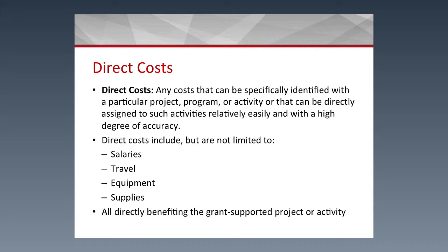Direct costs are the crux of the application — where the majority of your costs will be reflected and requested. These are costs that can be specifically identified with a particular project, program, or activity; can be directly assigned; and are easily identified with a high degree of accuracy. Examples of direct costs include travel, salaries, equipment, and supplies. They all must have a direct benefit to the grant-supported activity or project.